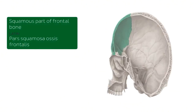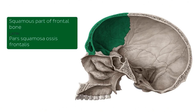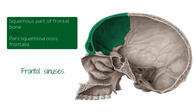Now we're going to briefly talk about the squamous part of the frontal bone, which we're now looking at in a sagittal cut of the skull. The squamous part of the frontal bone comprises the frontal sinuses, which are located superior to the orbit on the mesial side and are separated by a septum. On another tutorial, I want to take more time to talk about the different frontal sinuses and where they're located precisely.